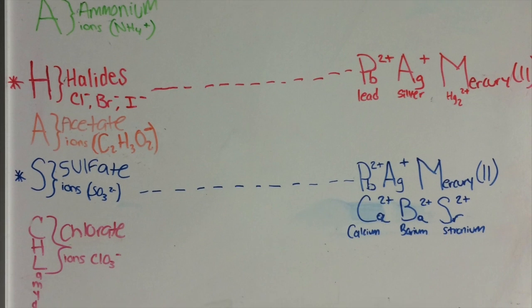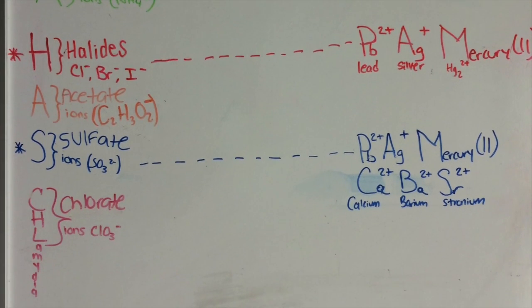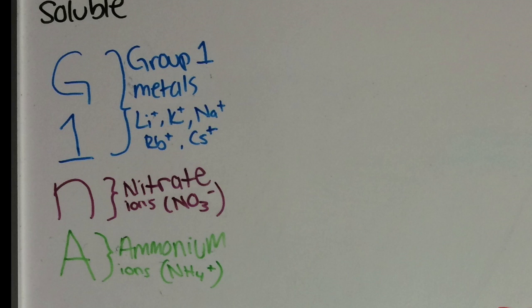So, Gina has chlamydia is what is always soluble. Gina is spelled G1NA. The G1 stands for Group 1 Metals, and those are lithium, potassium, rubidium, cesium, sodium, and they all have a plus 1 charge.